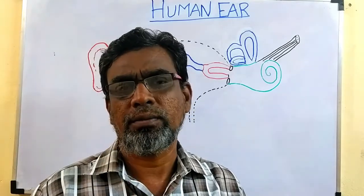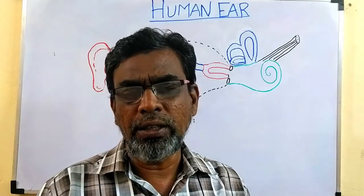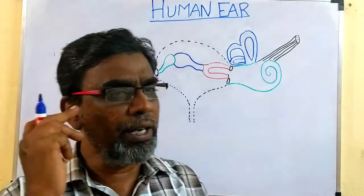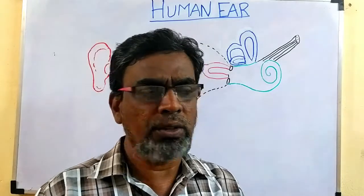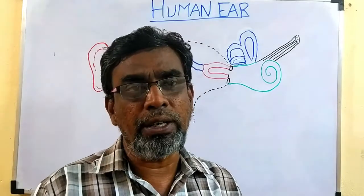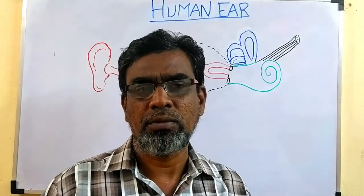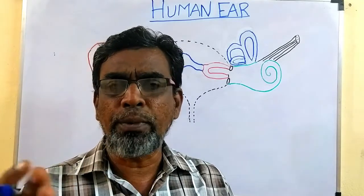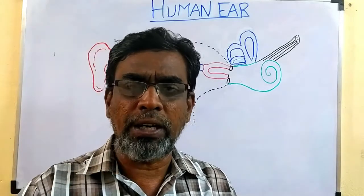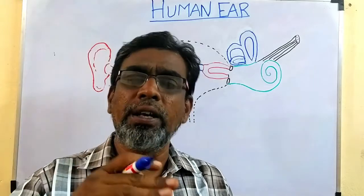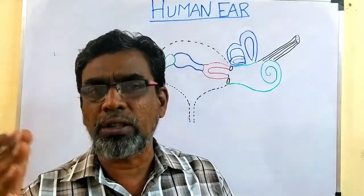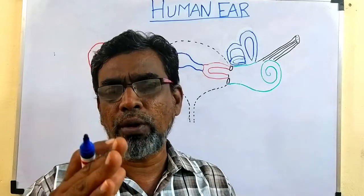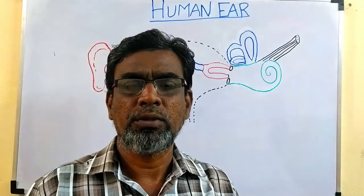The ear is the hearing organ. This ear performs two functions. One is hearing, which we know very well. The second one is body balancing, called equilibrium of the body. These two functions are performed by the ear, and various structures within the ear each perform different functions.